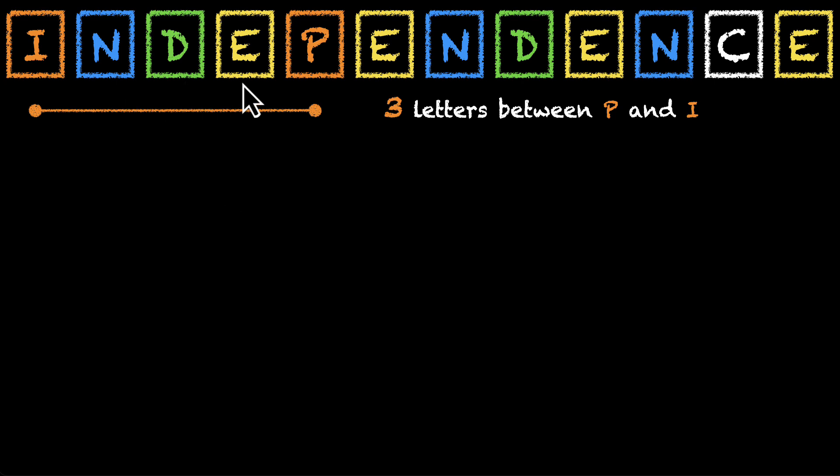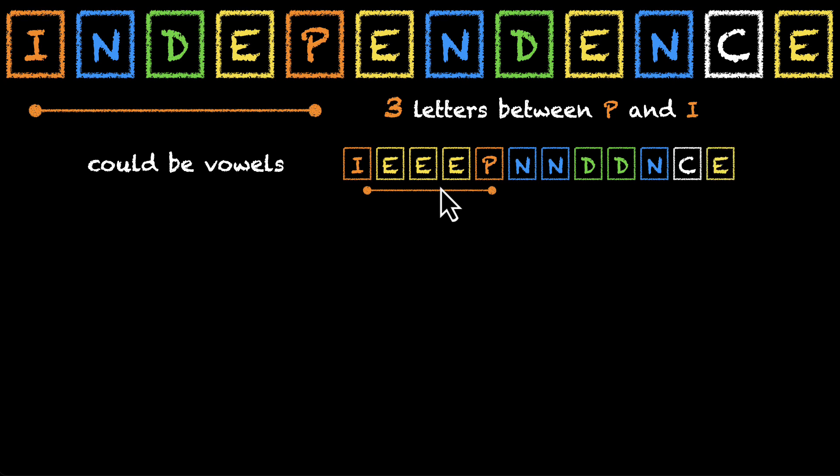Now these three letters could all be vowels. Here's an example. In this scenario, all three of them are E's. The words that we're looking for could look something like this.